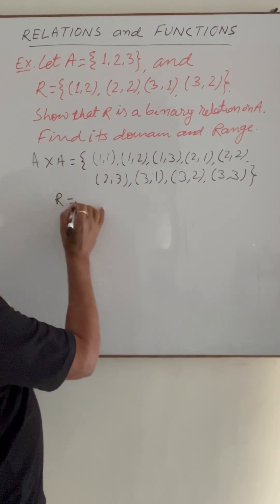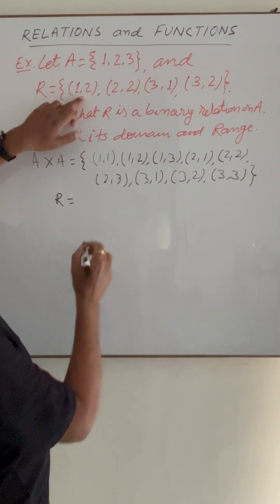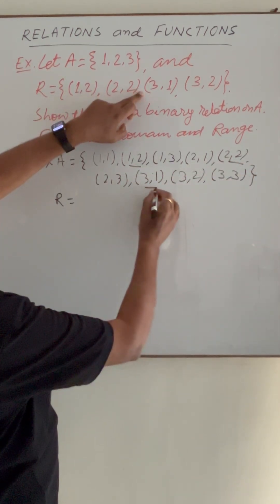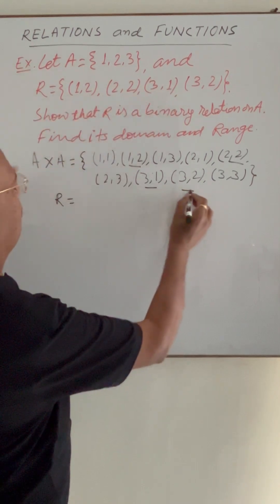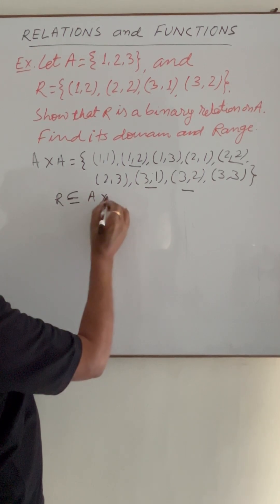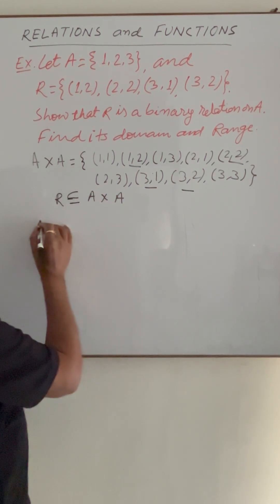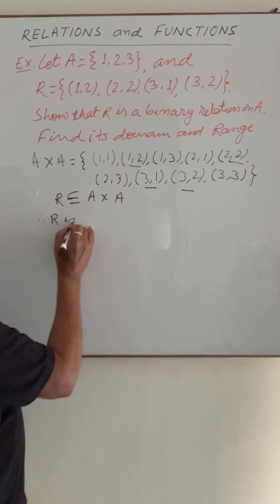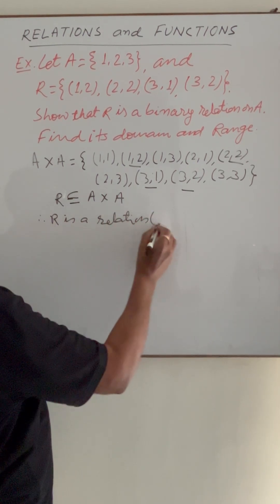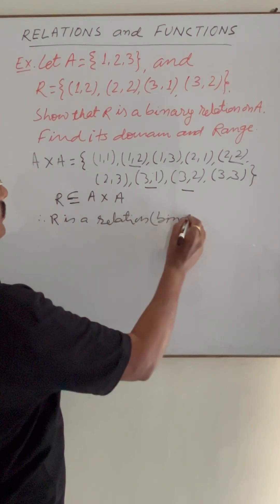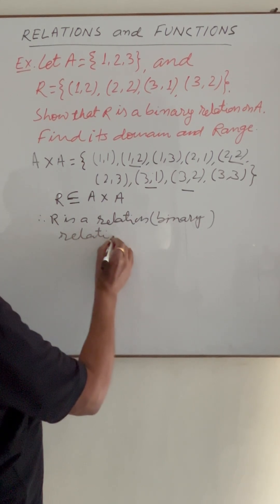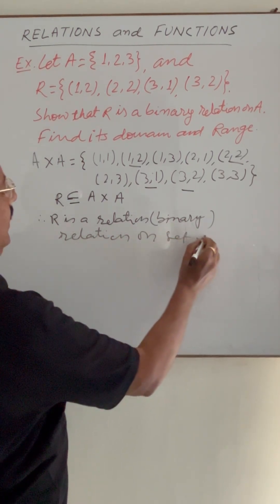And here R is having elements (1,2), (2,2), (3,1), and (3,2). So definitely here R is a subset of A cross A. So therefore R is a relation. Which type of relation? Binary relation on set A.